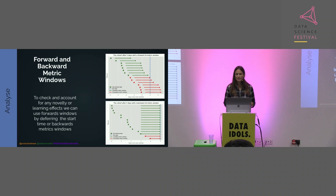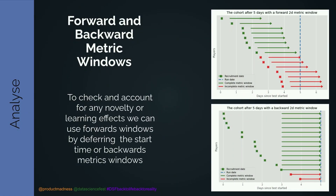We can handle these effects in a couple of ways. One way is to look at forward windows, as I've been discussing. However, we can also defer the start time: rather than using the recruitment date as the start time, we defer it to a later date and then still take two days from there, removing players with incomplete metric windows. The other option is a backwards window — we look at the day we're analyzing the data, and look at the most recent two days. Both approaches aim to remove that initial short-term effect so we can get an idea of the true long-term effect.